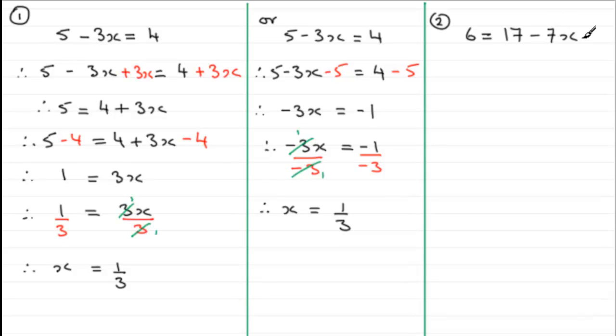So to do something like this, if I continue with the idea of removing our negative x term from whichever side it's on, it's on the right hand side here. I need to remove the minus 7x, so I'm going to add 7x to both sides.